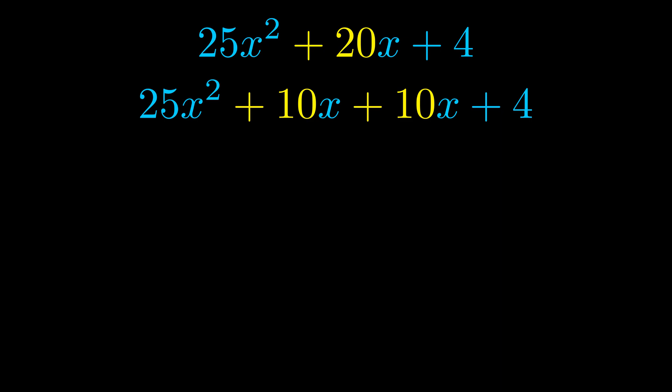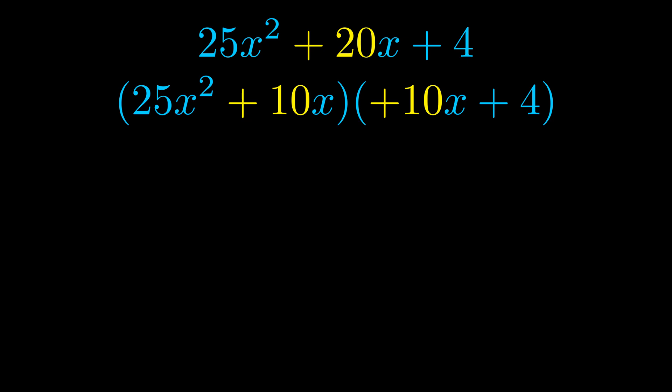Once we've done this we go ahead and put parentheses around the first term and the last term. And we do that so that we can take the greatest common factor out of both terms.